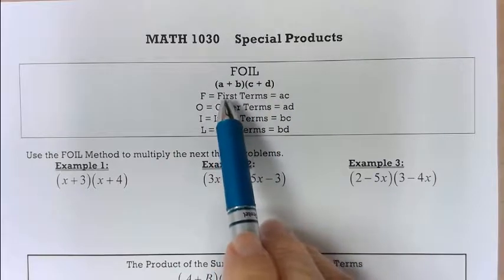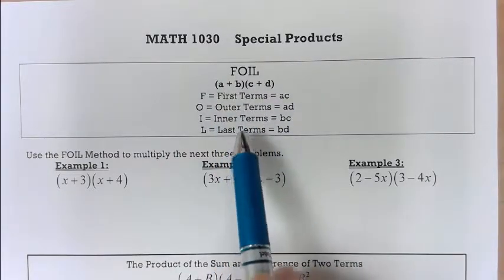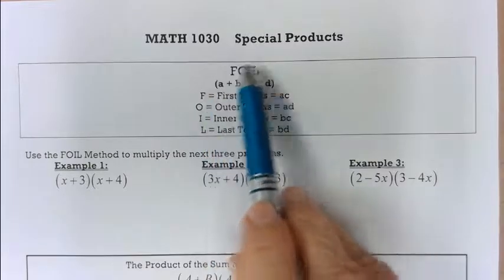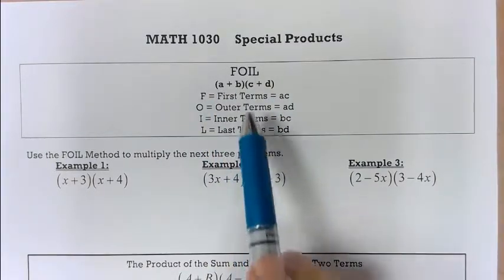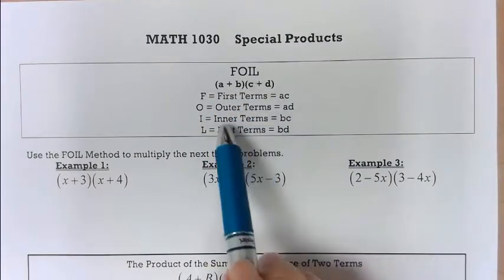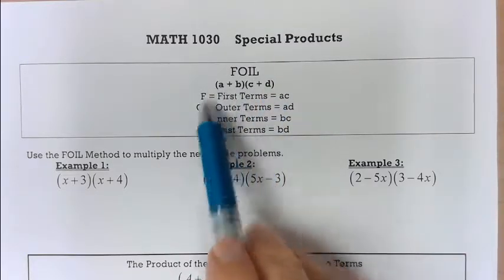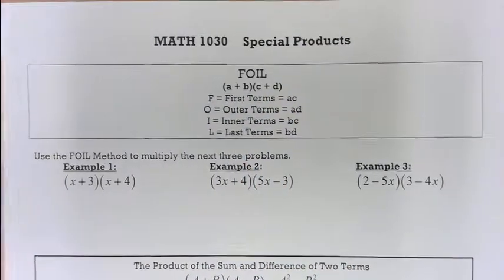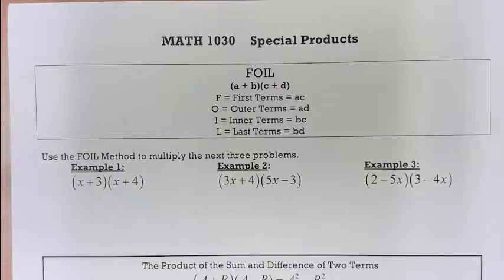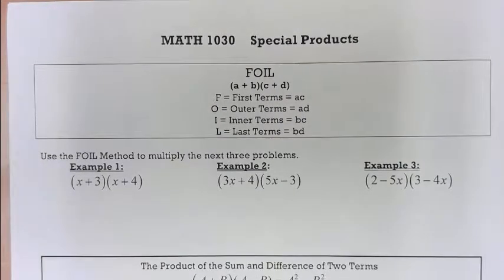A times C would be first term times first term. The O is the outer terms multiplied, B times C would be your inner terms, and B times D is your last term. That's where the FOIL comes from, and it's just a nice easy way to remember how to multiply a binomial times a binomial.